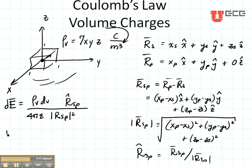In order to find the electric field, we will do a volume integral where our Rho V is going to be 7XYZ. What kind of X's are these? Are these XS terms or are they XP terms? Because these are associated with the source, these are XS terms.